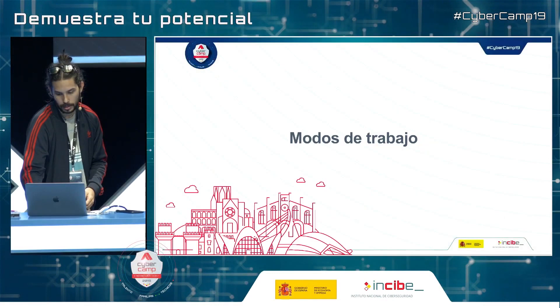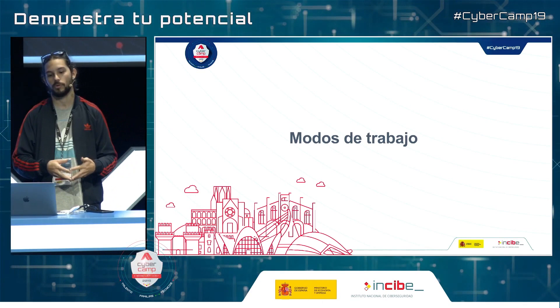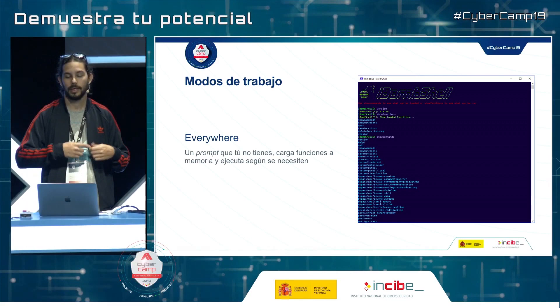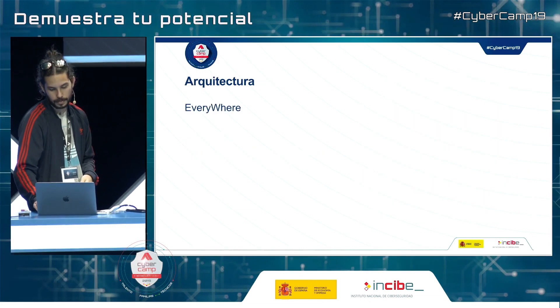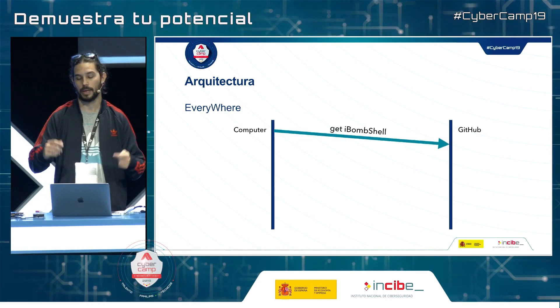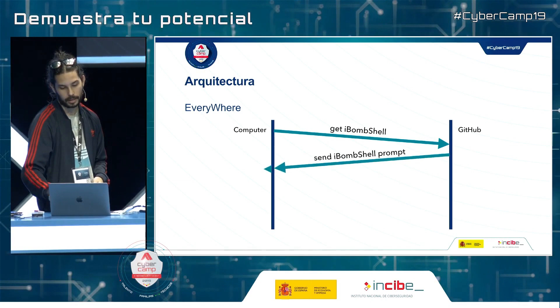There are two ways of working. The system — iBombshell executing in memory — is always the same. The first way of working is 'everywhere' mode. This is a prompt that you load into memory and use whenever you need it. The architecture is simple: our computer connects to the GitHub repository, downloads the iBombshell prompt into memory, and then we can start interacting with the environment.